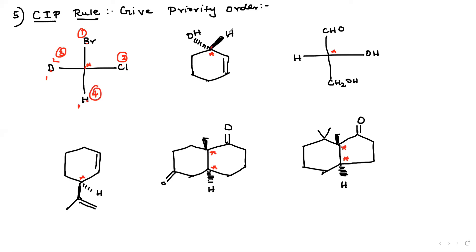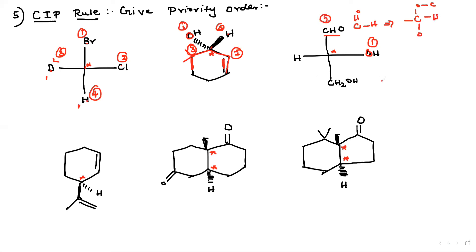Second molecule: this carbon is attached to carbon, hydrogen, carbon, and double bond carbon. But this is directly attached to oxygen — so oxygen is priority 1, this is the least priority. This carbon is attached to only 2 hydrogens and 1 carbon — it is a double bond, which ranks higher than single bond, so this is priority 2, and this is priority 3. That molecule is very simple. CHO: I can write this with duplicate atoms — carbon, oxygen, carbon, oxygen. This is the second one, either carbon, hydrogen, hydrogen, oxygen. This carbon attached to oxygen, oxygen, hydrogen — that is priority 1. This gives priority 2, 3, and 4.